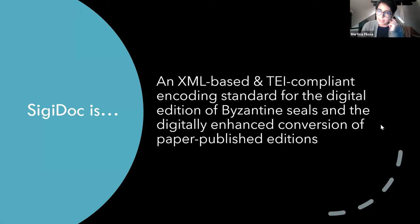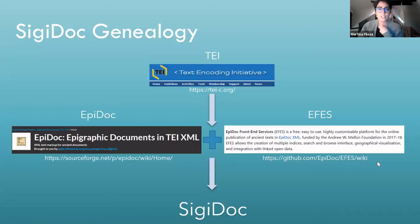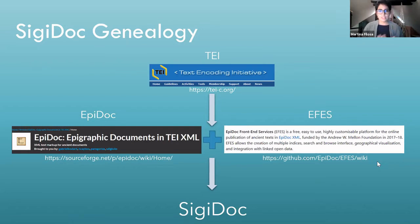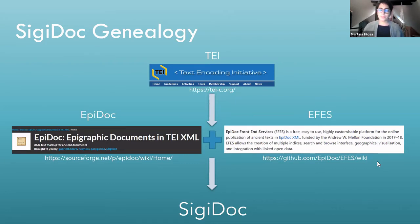SigiDoc is an XML-based and TEI-compliant encoding standard for the digital edition of Byzantine seals, and the digitally enhanced conversion of paper published editions. Its genealogy is self-explanatory: TEI is like the grandfather of SigiDoc, of which it is a subset. We walked in the steps of EpiDoc and did for sigillography pretty much what EpiDoc did for epigraphy. A couple of years ago, a platform called EFES — EpiDoc Frontend Services — was released, which we used for transformation in HTML.